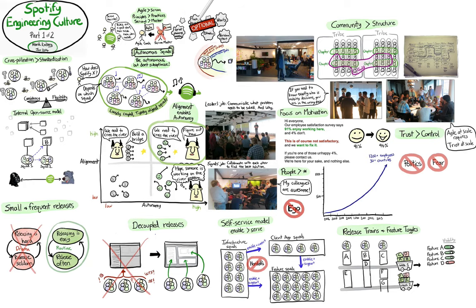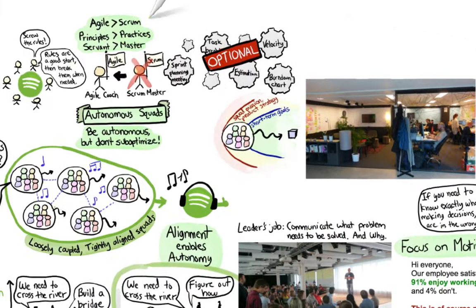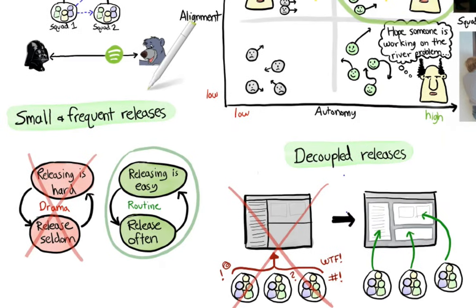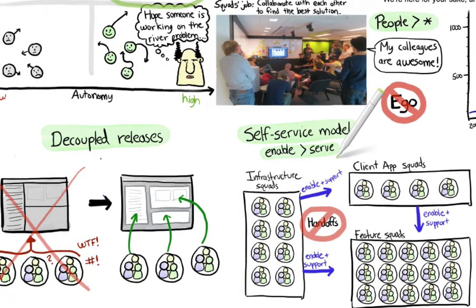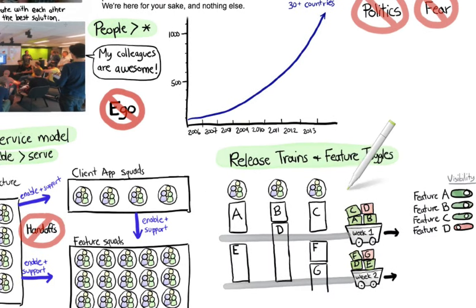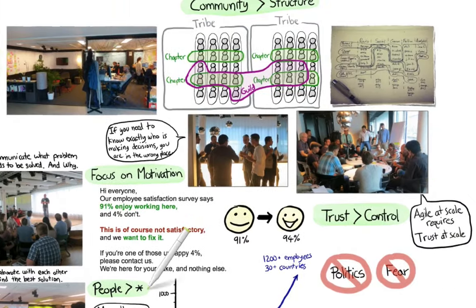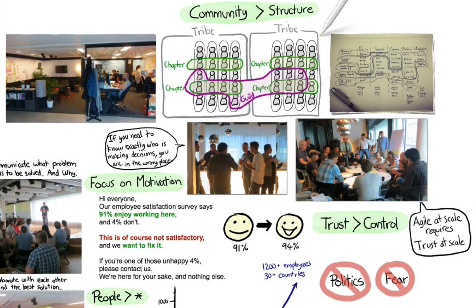Okay, quick recap from part one. Our culture is based on agile principles. All engineering happens in squads, and we try to keep them loosely coupled and tightly aligned. We like cross-pollination and have an internal open source model for code. Squads do small and frequent releases, which is enabled by decoupling. Our self-service model minimizes the need for handoffs, and we use release trains and feature toggles to get stuff into production early and often. Since culture is all about the people, we focus on motivation, community and trust, rather than structure and control. That was part one.